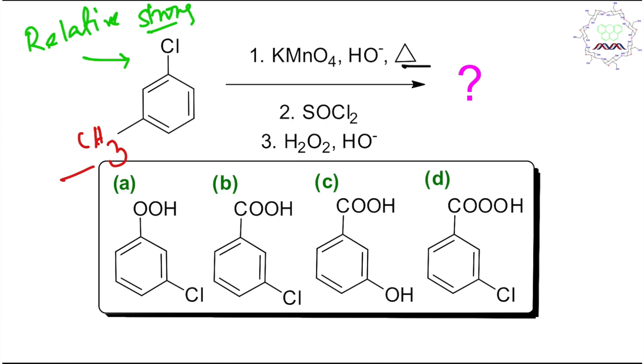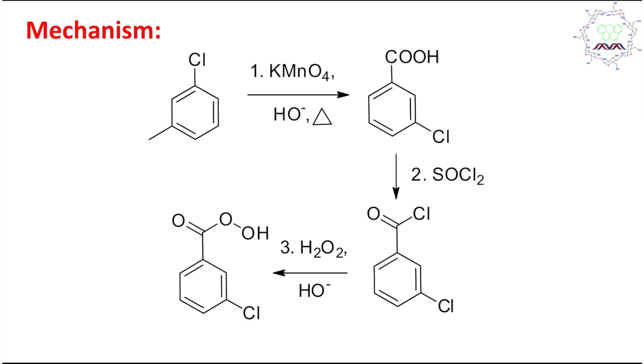Manganese has +7 oxidation state, meaning it's a very strong oxidizing agent. Keeping this information in mind, let's start. First, what will it do? KMnO4 in presence of this drastic condition will oxidize this methyl group.